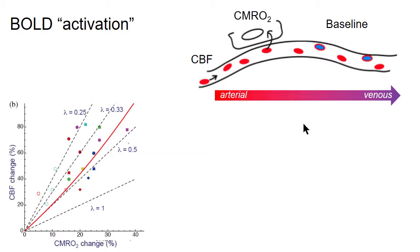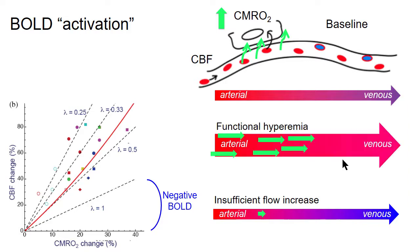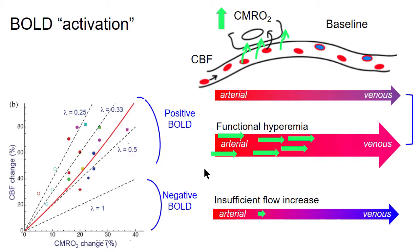This translates into BOLD activation. At baseline, blood arrives fully oxygenated on the arterial side, and deoxyhemoglobin accumulates on the venous side after oxygen extraction. During activation with insufficient flow increase, increased oxygen metabolism would produce greater deoxyhemoglobin on the venous side, causing a negative BOLD signal change due to dephasing. However, with functional hyperemia, blood flow far exceeds what is required, so the venous side ends up with excess oxygen compared to baseline — resulting in a positive BOLD effect.